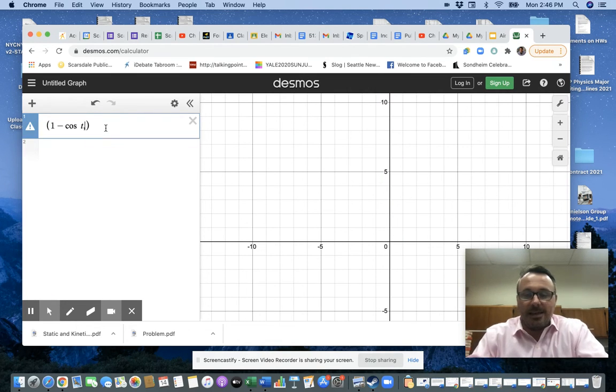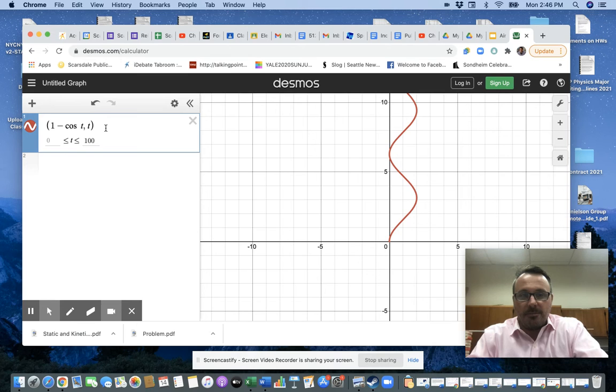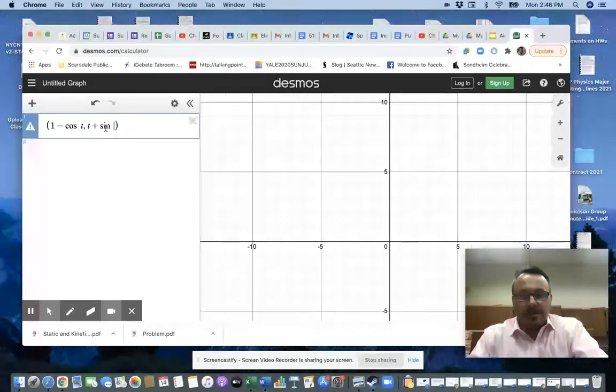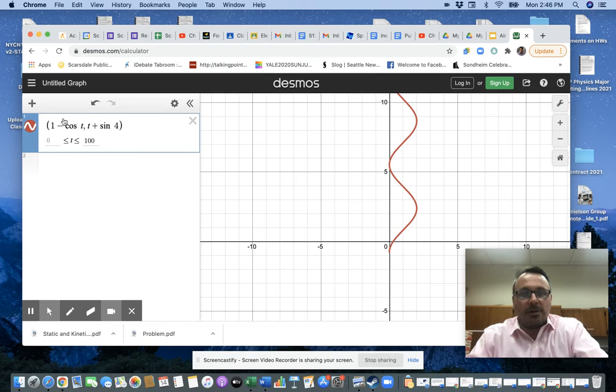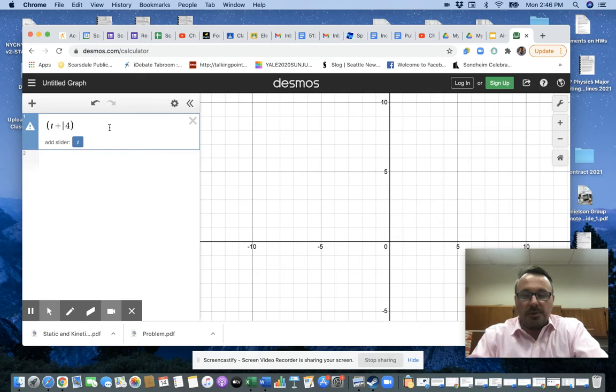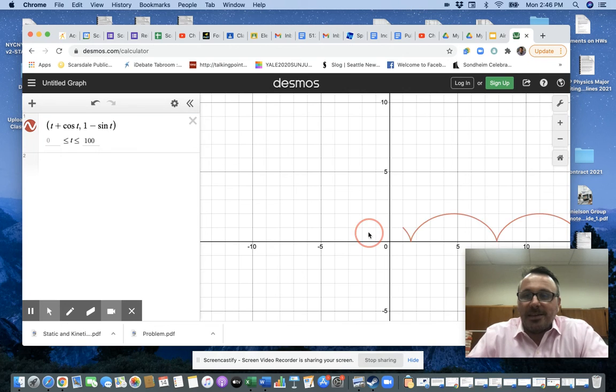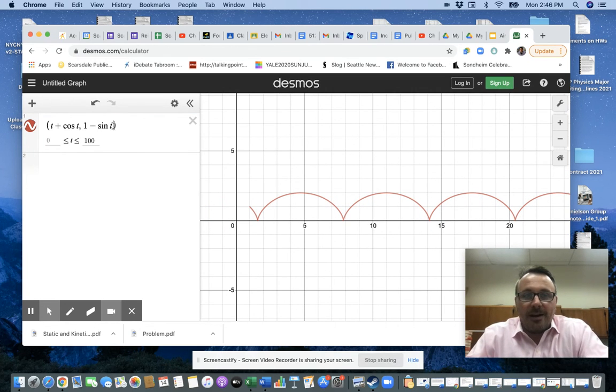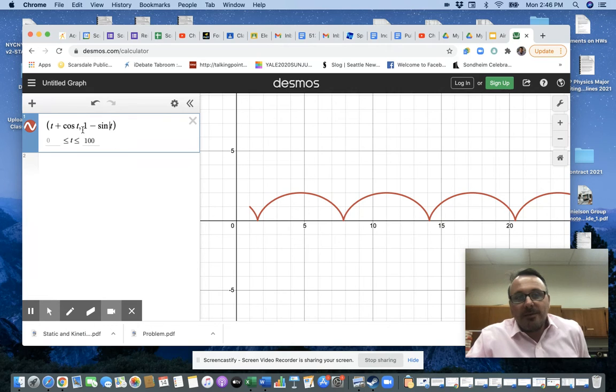1 minus cosine t. Oh, I don't know. T plus sine of t. And you get a much more regular-looking figure here. Actually, let me flip-flop this to make this sine and this cosine... Actually, no, what I want to do is let's do t plus cos t and then 1 minus sine of t. And you get this rather bizarre-looking figure there. I make that a 2. It gets all sorts of freaky. Right? But that's what the parameter is doing.